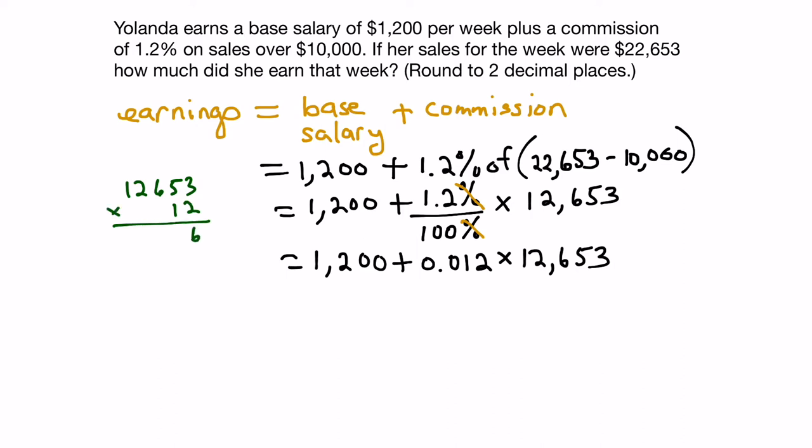2 times 3 is 6, 2 times 5 is 10, carry the 1. 2 times 6 is 12, plus 1 is 13, carry the 1. 2 times 2 is 4, plus 1 is 5, and 2 times 1 is 2. Then we put an x there, or 0. We can go 1 times 3 is 3, 1 times 5 is 5, 1 times 6 is 6, 1 times 2 is 2, and 1 times 1 is 1, and then we add up the columns. That would be 6, 3, 8, 11, carry the 1, 5, 1.